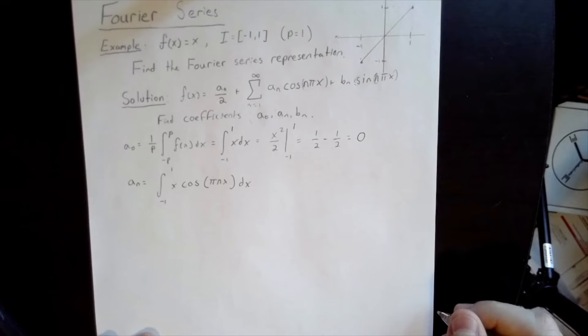In order to calculate the coefficients a_n, we must calculate the integral of x cosine pi nx over the interval from negative 1 to 1. We proceed using our old friend integration by parts.